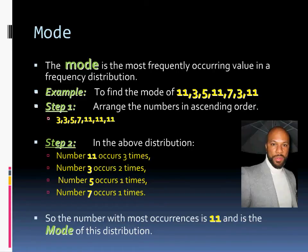Mode is our final tool to analyze data. Mode is what we use to find the most common value of a frequency distribution — the most common response in our surveys. For example, with the values 11, 3, 5, 11, 7, 3, and 11: arrange them in ascending order — 3, 3, 5, 7, 11, 11, 11. Number 11 occurs three times, number 3 occurs two times, number 5 occurs once, and so does 7. Based on this distribution, the mode is 11 — it's the most common response.